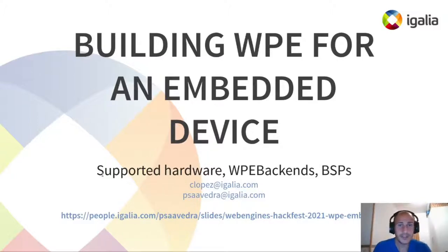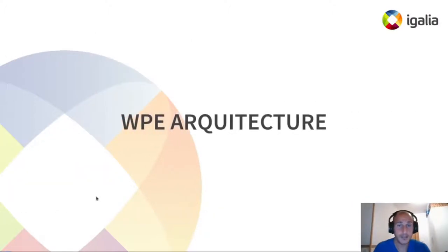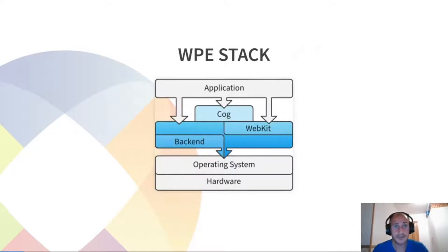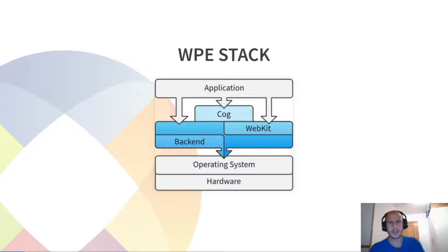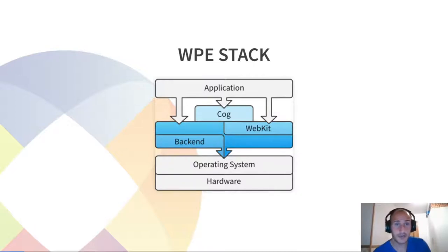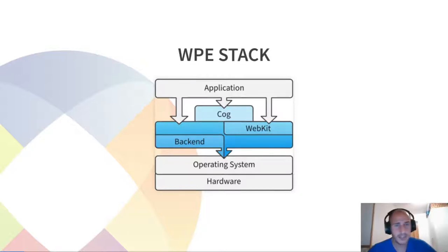Before going into the details I want to explain a bit the WPE architecture and how the WebKit is organized in components. In this figure you can see the layers in which WPE is structured. Usually an application sits at the top of the code library and is the one that usually implements the UI process role. This application is linked to the WebKit library, and below in the WebKit layer there is something you can identify as the backend, which is responsible for the particular implementation of the rendering, the input handling, and all the communications between the different created processes.